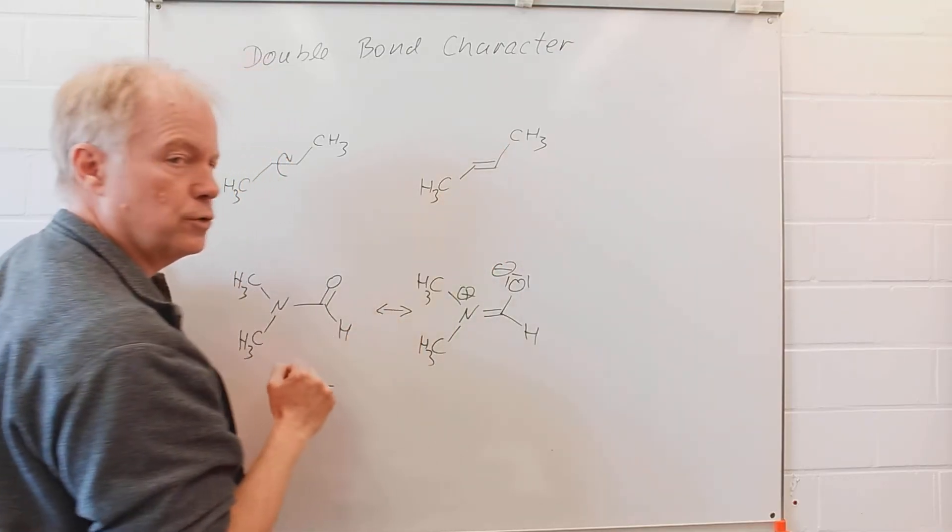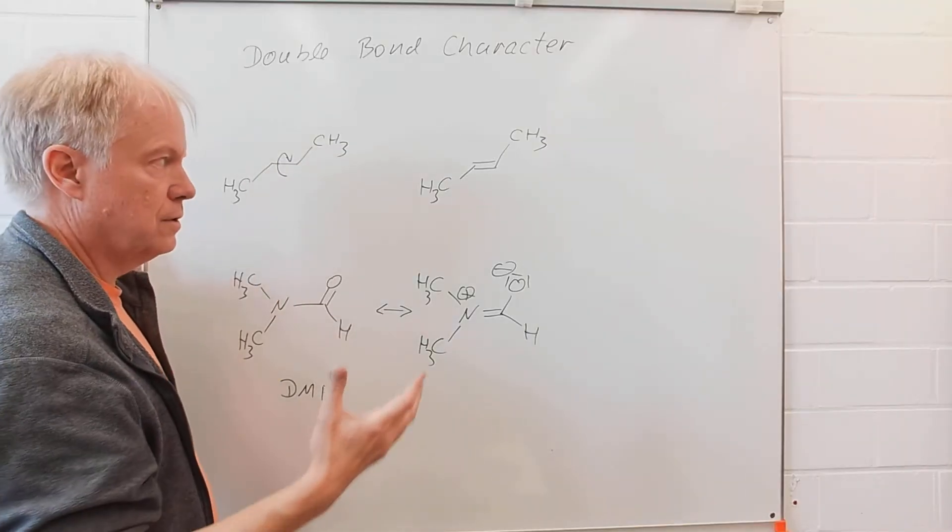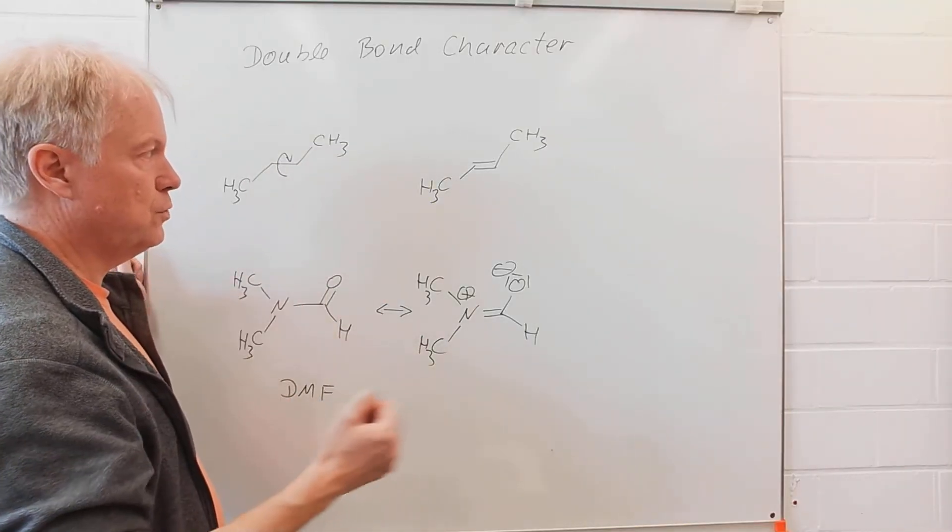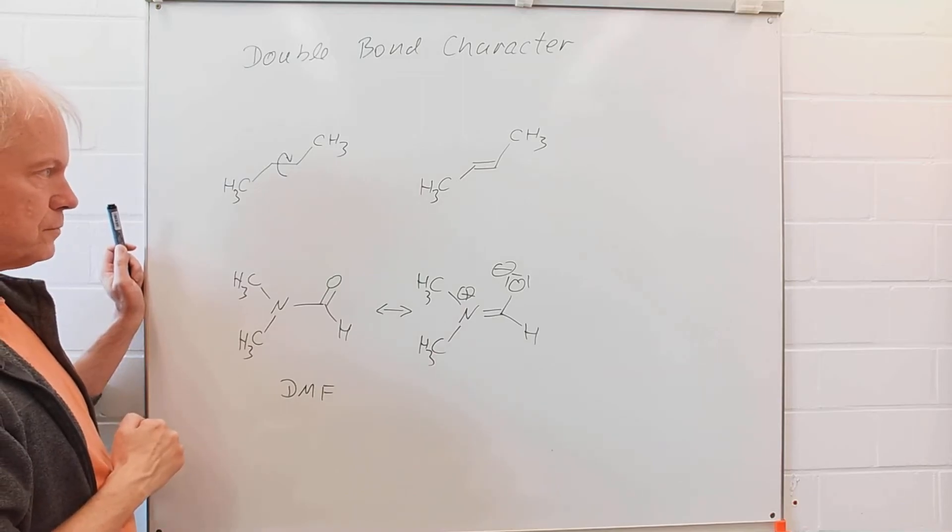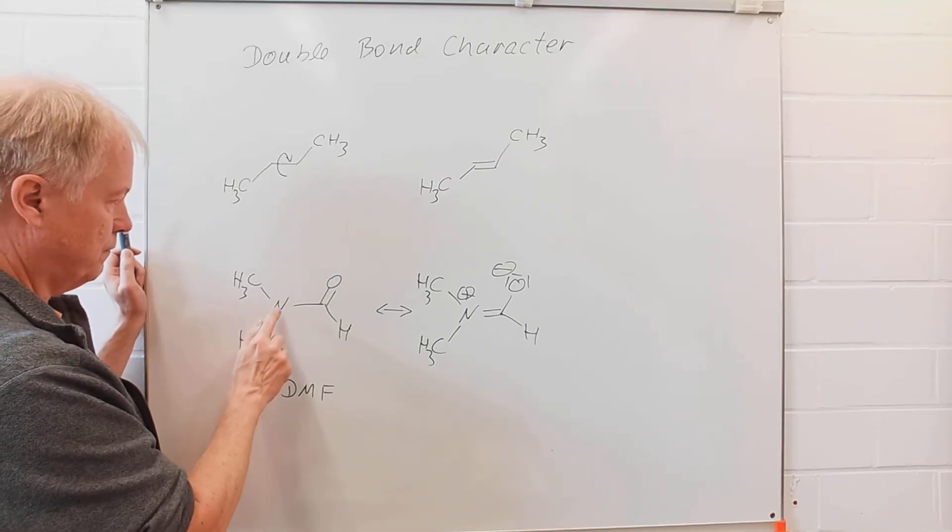The compound with the two methyl groups cis to each other is another isomer, the stereoisomer.